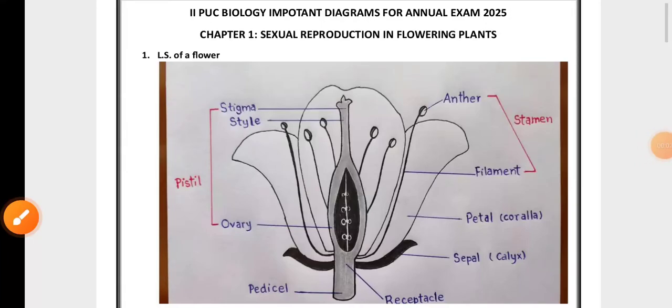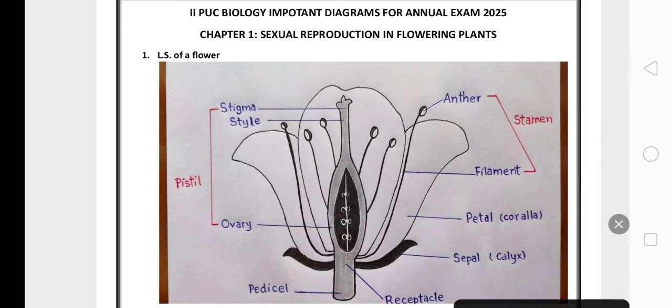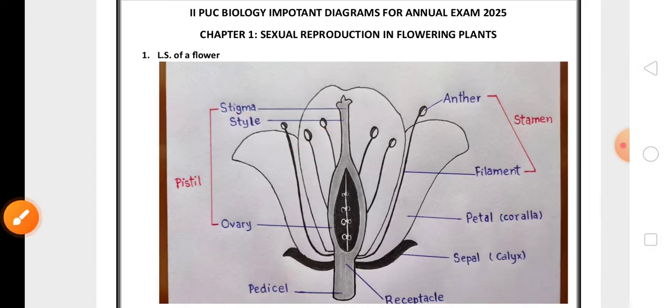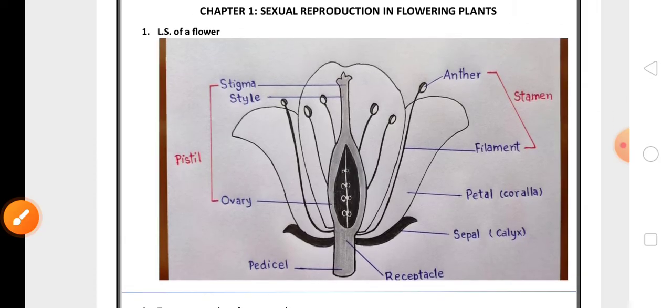Hello students, second PUC Biology important diagrams for annual exam 2025. This video we are going to discuss some of the most important diagrams for the exam. As you know in biology, from diagrams itself you may get 20 to 25 marks. So here are few diagrams. First question is longitudinal section of flower from sexual reproduction in flowering plants.